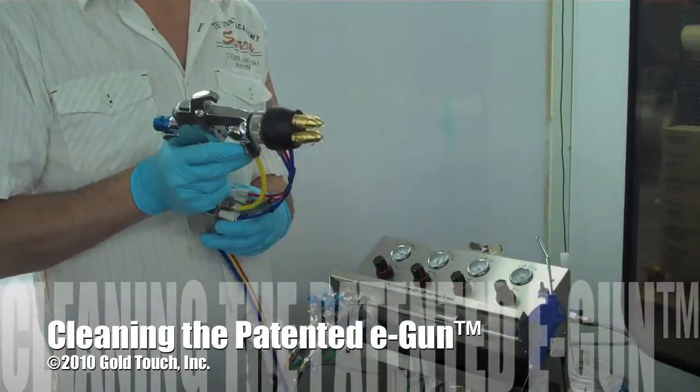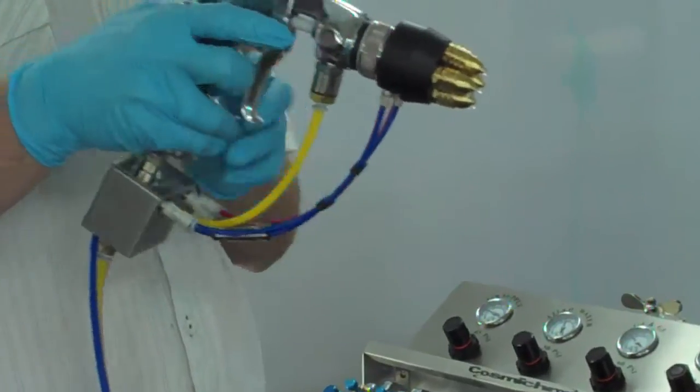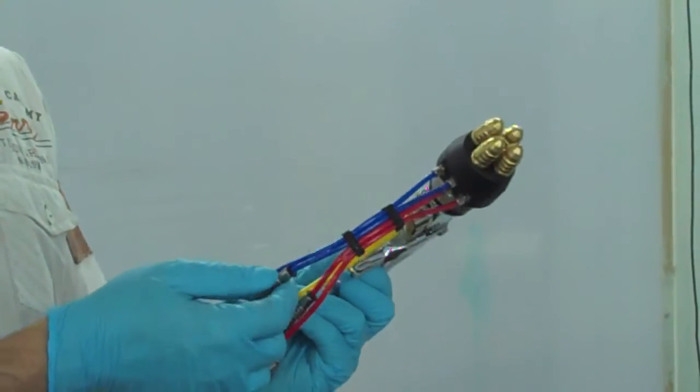This is the E-Gun with the Quattro head. It has four nozzles and you can control the four nozzles by removing the little clip here.